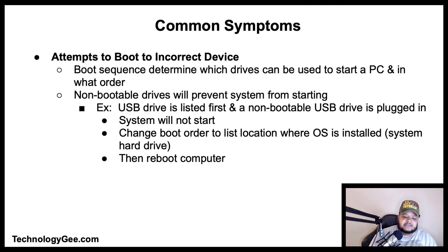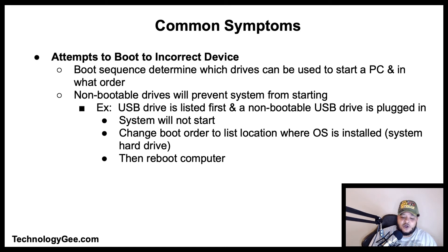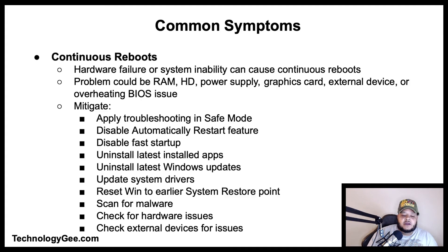Another common symptom is attempts to boot to incorrect devices. In the BIOS settings, the boot sequence determines which drives can be used to start a computer and in what order. Non-bootable drives in the boot sequence will prevent the system from starting. For example, if a USB drive is listed first and a non-bootable USB drive is plugged in, the system will not start. To remedy this, change the boot order to the location where the operating system is installed — typically the system hard drive — then reboot.